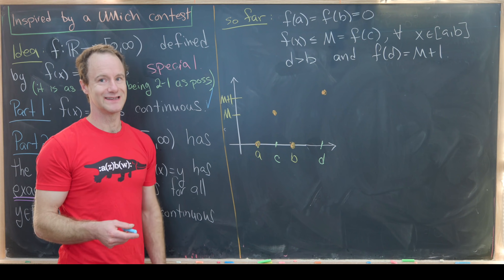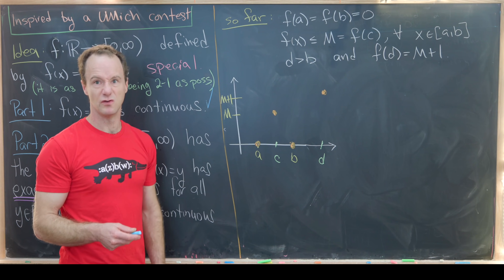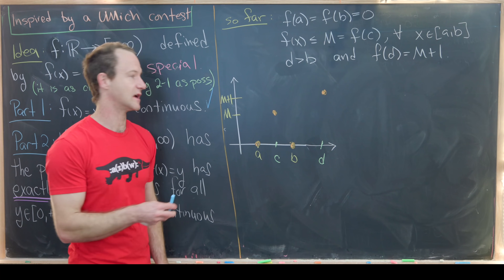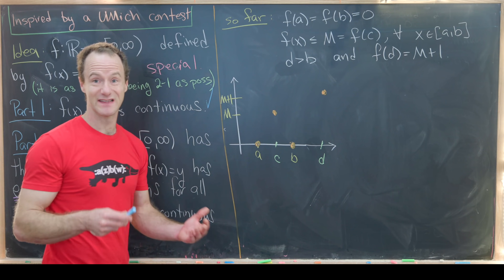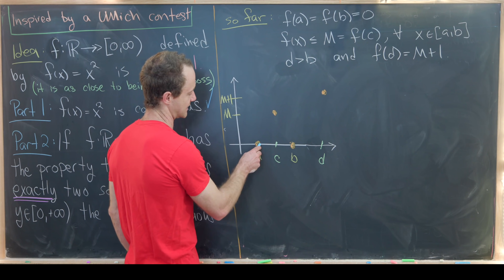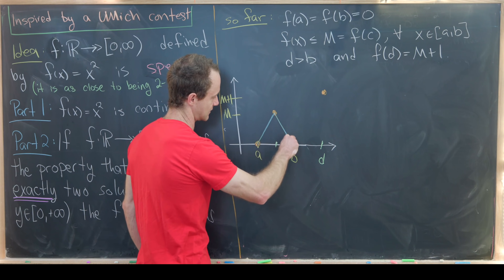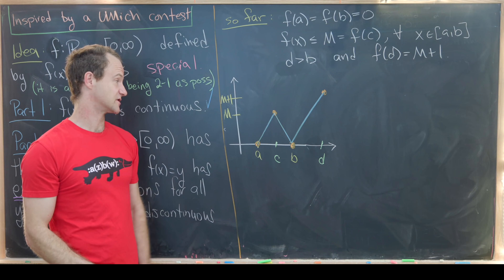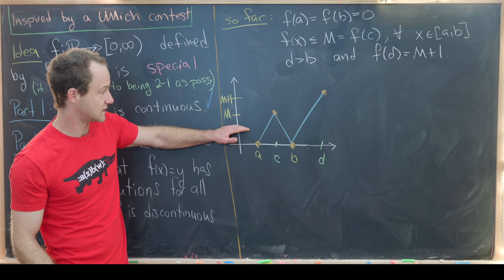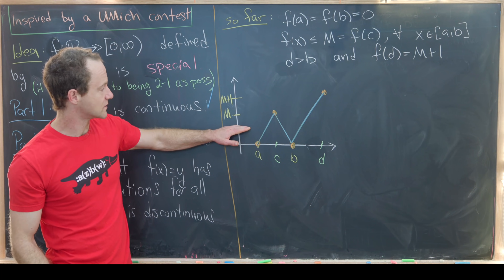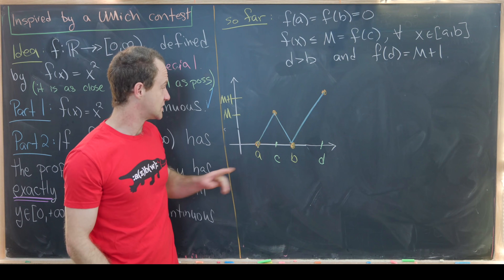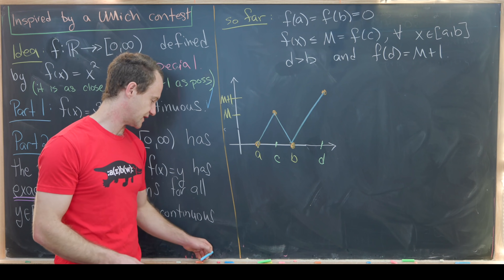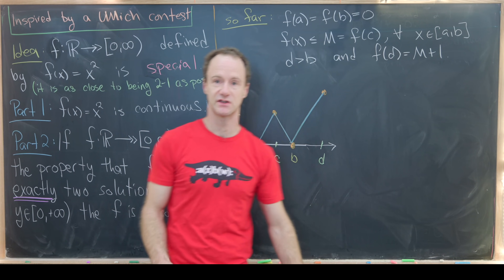Since f is only continuous — we can draw it without lifting the chalk, but it need not be smooth — consider placing a horizontal line at some height between 0 and M. That line is forced to cross the graph at three points: once between a and c, once between c and b, and once between b and d. That means a certain equation has three solutions instead of two, which would be a contradiction.